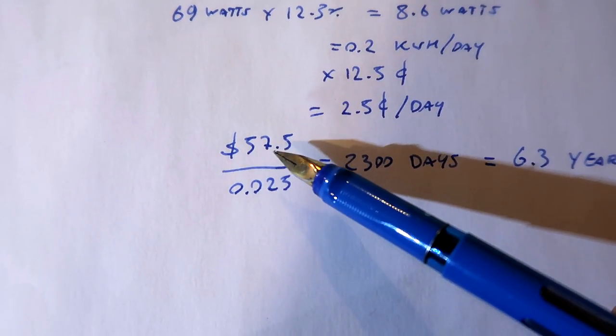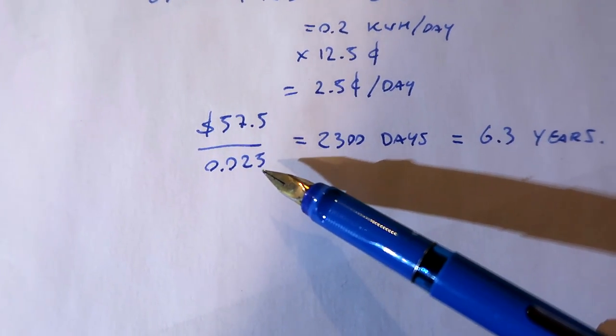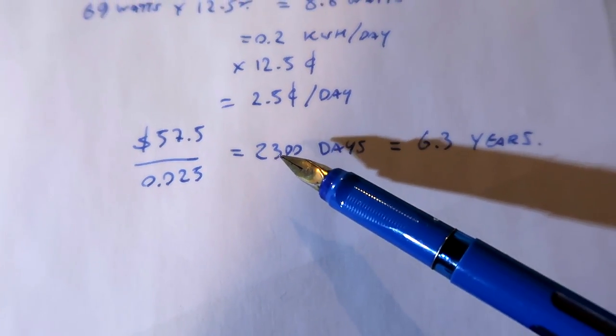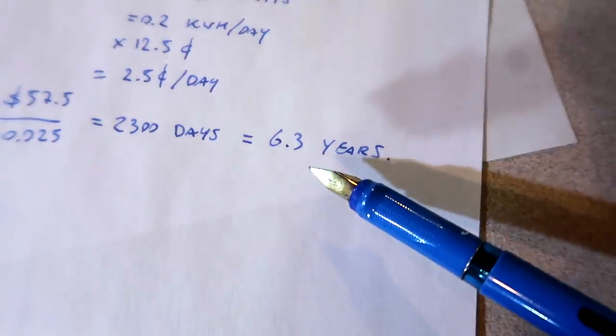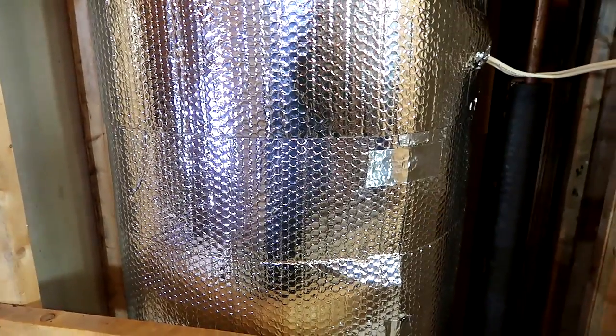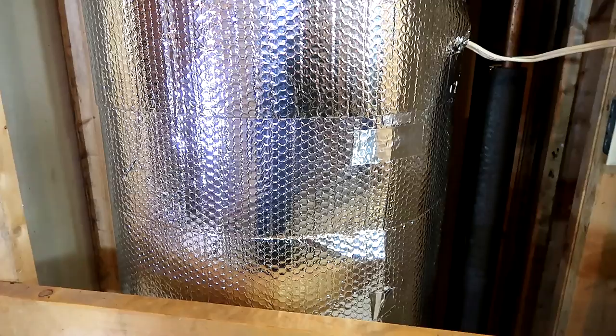Taking the $57.50 for the insulation, divide that by 2.5 cents, is 2,300 days, or 6.3 years for this insulation to pay for itself. That's a far cry from 6 months.